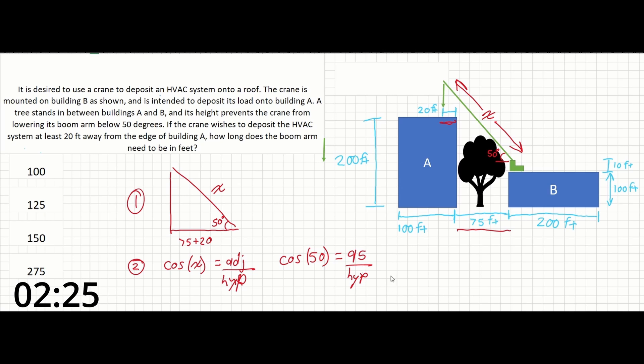Solving for that, the hypotenuse is going to be equal to 95 divided by the cosine of 50. And this is going to be 147.5 feet. This would make our closest answer over here 150.